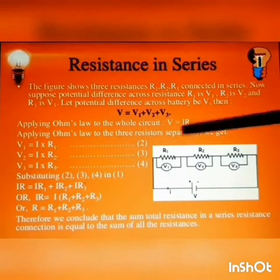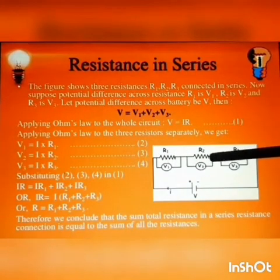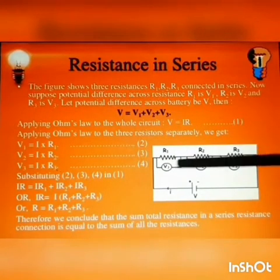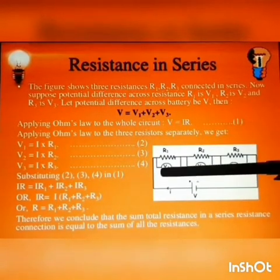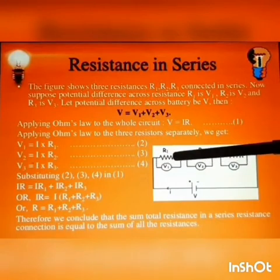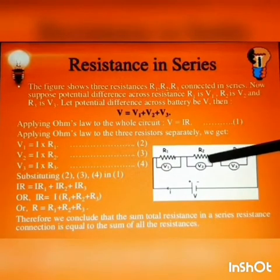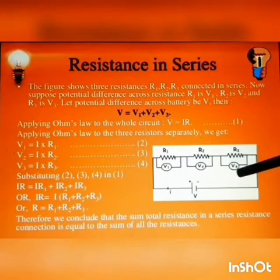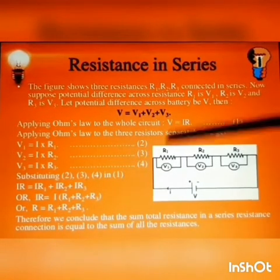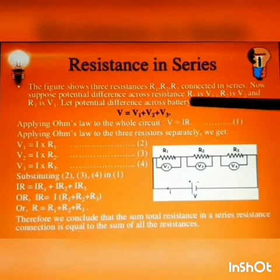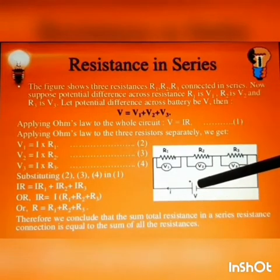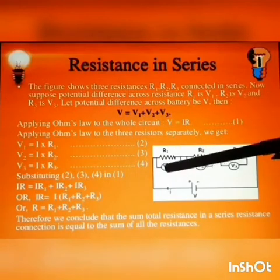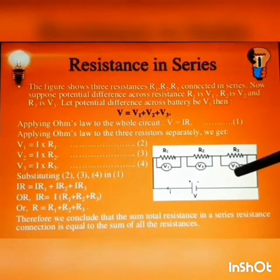Here we have taken three resistances R1, R2 and R3 connected in series. Let us consider that the potential difference across R1 is V1, across R2 is V2 and across R3 is V3. We know that in a series connection, the total potential difference V is equal to V1 plus V2 plus V3.